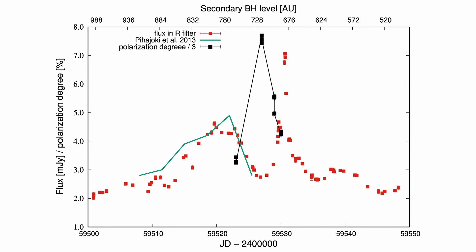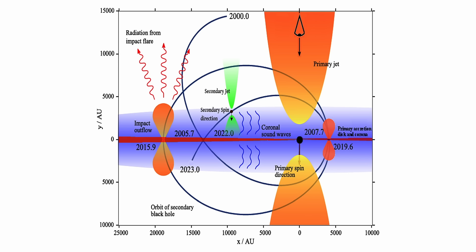They noted a significant change in the RI spectral index, indicating a new radiation component. The polarization variations observed during the flare's rise supports this finding. Based on the source size constraints, they propose that the new radiation component is likely originating from the jet of the secondary black hole.